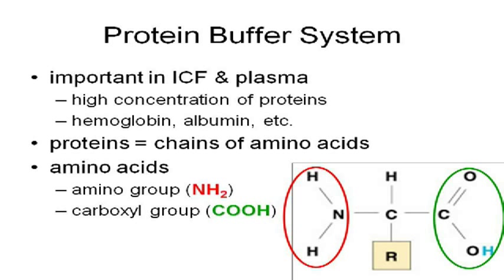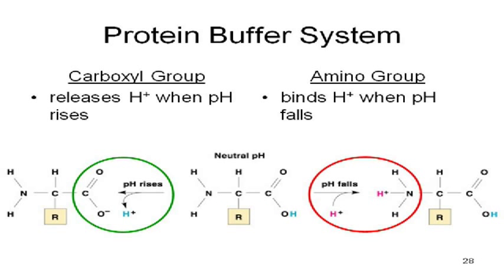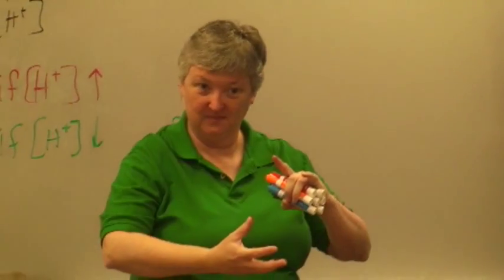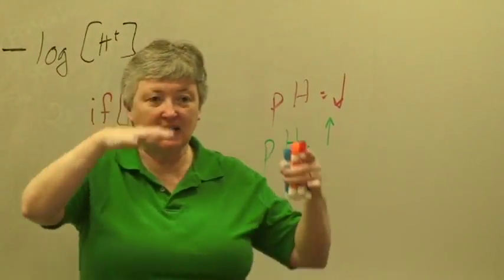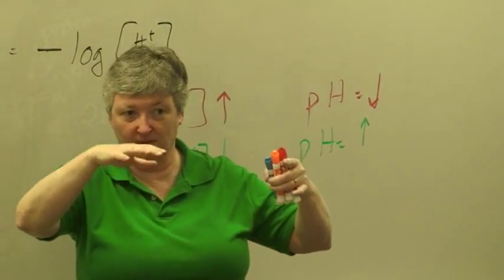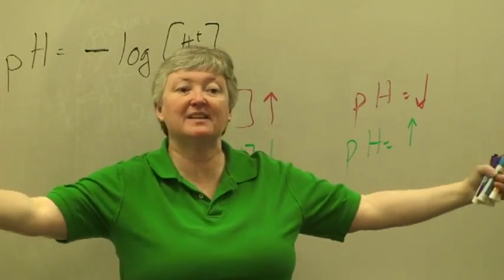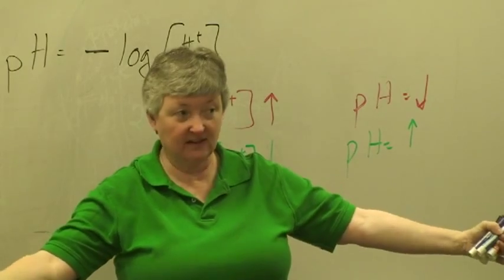Proteins are chains of amino acids. Amino acids have amino groups and acid groups. If the pH goes up, that means you don't have enough hydrogen ions, so the carboxyl group can release a hydrogen ion — that will bring the pH down. If the pH goes down, you've got too many hydrogen ions, so the amino group can suck up some of those hydrogen ions. If it gets too out of whack, the protein will denature, because buffer systems have limits — they cannot infinitely control pH. But within a certain range, they can keep your pH between 7.35 and 7.45.